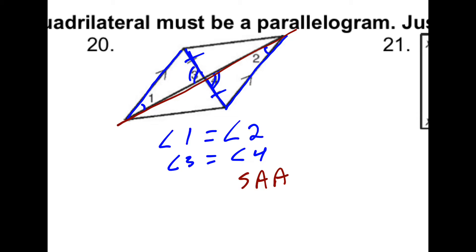And if both of these triangles are congruent, then the other diagonal is going to be bisected also. So therefore, these must be a parallelogram because both diagonals bisect each other.